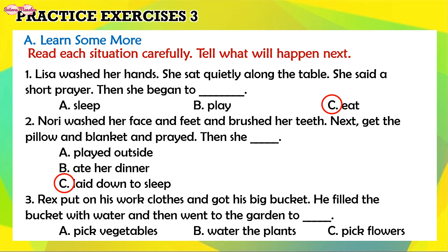3. Rex put on his work clothes and got his big bucket. He filled the bucket with water and then went to the garden to... A. Pick vegetables. B. Water the plants. C. Pick flowers. And your answer is B. Water the plants.